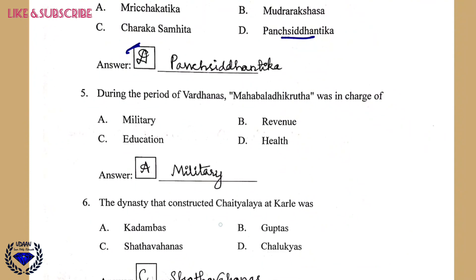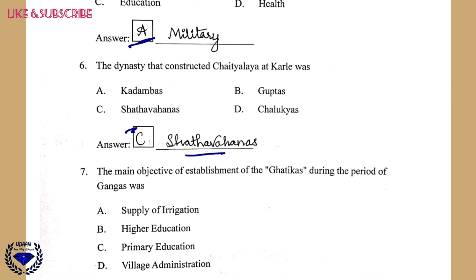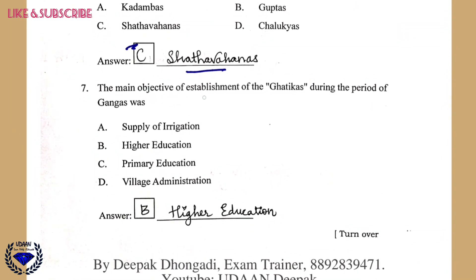Question 5: During the period of the Vardhanas, Mahabaladi Kruta was in charge of the military — that is option A. Question 6: The dynasty that constructed the Chaitanya at Karle was option C, Satvanas. Question 7: The main objective of the establishment of the Ghatikas during the period of the Gangas was that they are centers for higher education — the right answer is option B.